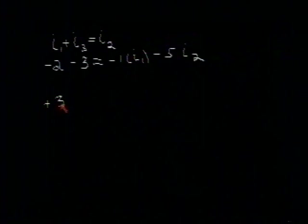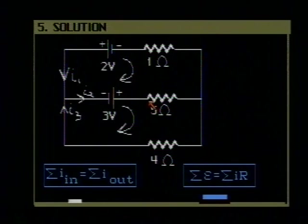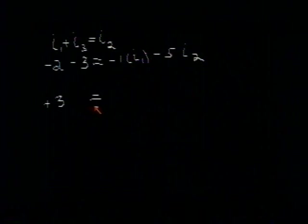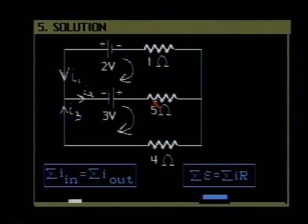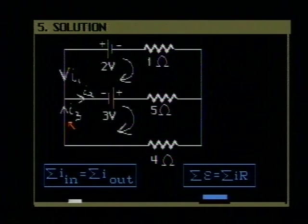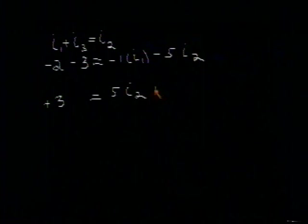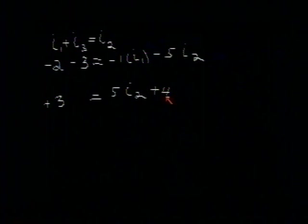And that's going to be equal to 5 ohms I go through in the direction of I2. So that's plus 5 I2. And the 4 ohm resistor I am going through in the same direction as I3. So it's going to be plus 4 times I3.